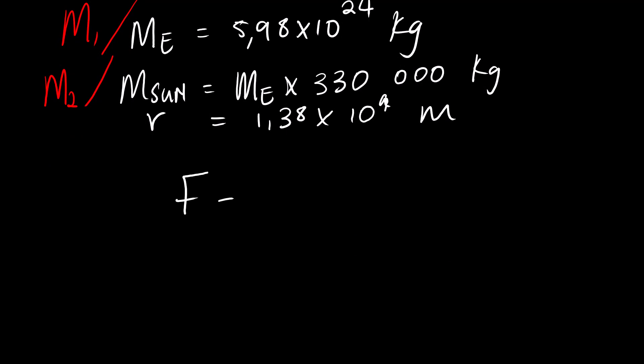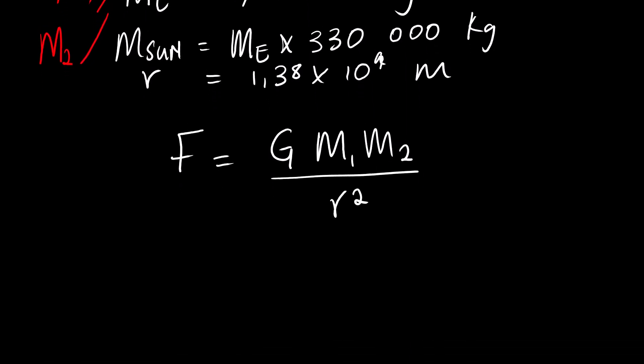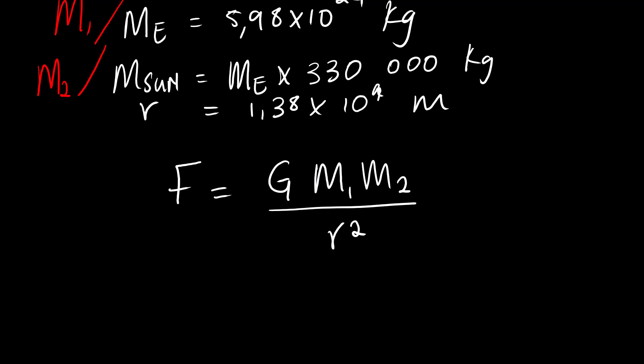We start with the equation always. F equals G M1 M2 divided by R squared. So F is equals to G. We said it's 6.67 times 10 to the power negative 11.